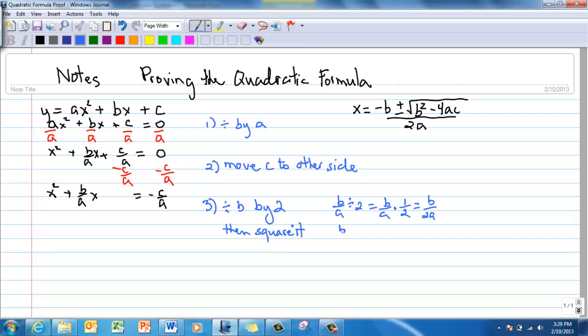Then square it. So that means I'm going to take this b over 2a and square it. That becomes b squared over 2 parentheses a squared. I'm not done. That means the 2 is being squared and the a is being squared as well. 2 squared would be 4, a squared would be a squared. That's the number that I'm going to add to both sides. I'm adding b squared over 4a squared.